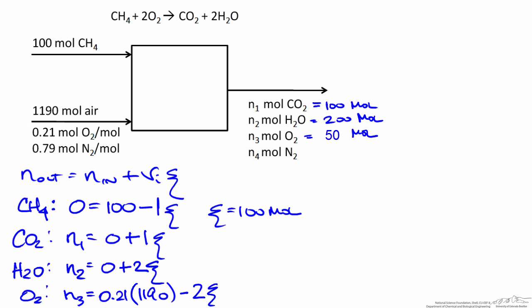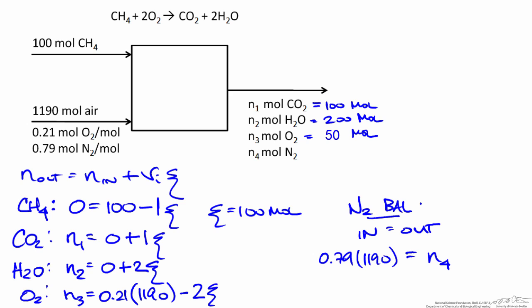The last thing we need to find is the moles of nitrogen leaving. We don't need to write a molecular species balance in terms of the extent of reaction because nitrogen doesn't react — it's inert, meaning whatever goes in comes right back out. So we write a simple balance: N_in = N_out. What's going in is 0.79 times 1,190 moles of air, which must equal N4. Making that calculation, N4 equals 940 moles of nitrogen.